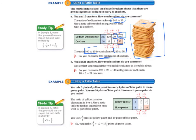Letter B: you eat 21 crackers — how much sodium do you consume? Notice that you can add the two middle columns in the table above. We take 18 and 3, which makes 21 crackers, and we add the sodium from those columns: 120 plus 20 equals 140 milligrams of sodium in 21 crackers.